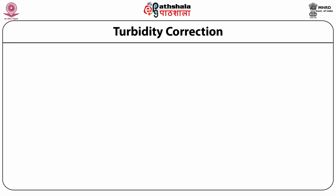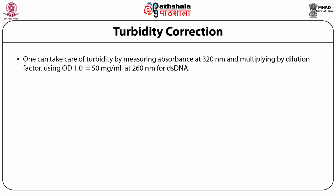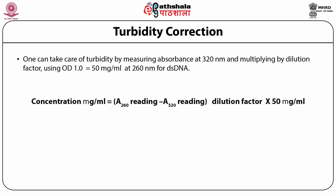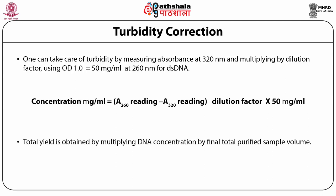For correcting turbidity in the sample, one can take the measurement of absorbance at 320 nanometers, multiply by dilution factor, and using OD = 1.0 for 50 micrograms per milliliter at 260 nanometers for double-stranded DNA, we can calculate the concentration in micrograms per milliliter. The total yield is obtained by multiplying the DNA concentration by the final total purified volume in the sample.